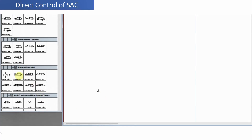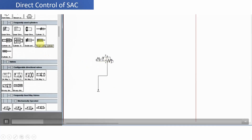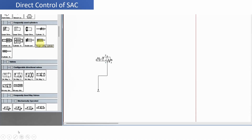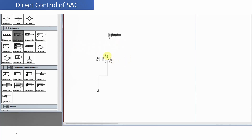We will select the three-by-two direction control valve — a solenoid operated direction control valve. The left envelope mode is solenoid operated and the right envelope mode is spring controlled, as shown by this particular spring. Then we will select the single acting cylinder from the components library of the Festo FluidSIM software.